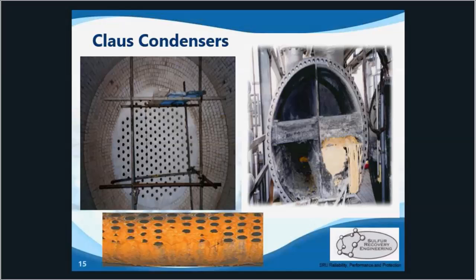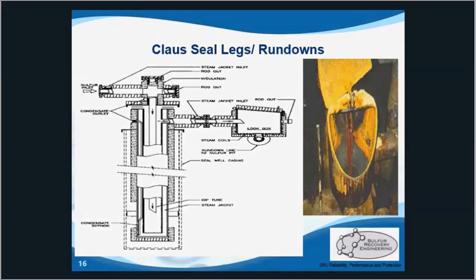The final condenser has a recommended optimal temperature of 125 degrees Celsius. This will minimize the sulfur vapor carryover to the thermal incinerator or tail gas treating unit. The condensers lead into sewer-type liquid sulfur rundowns, and these prevent the process gas from blowing to the sulfur pit or to atmosphere.